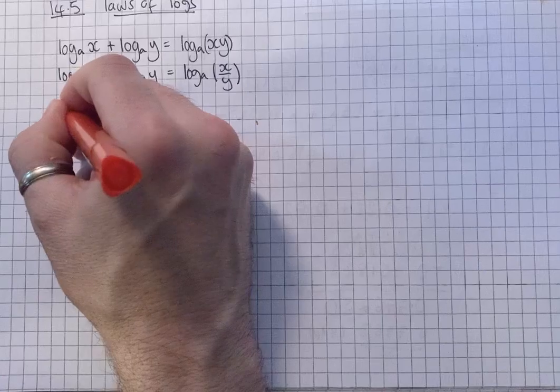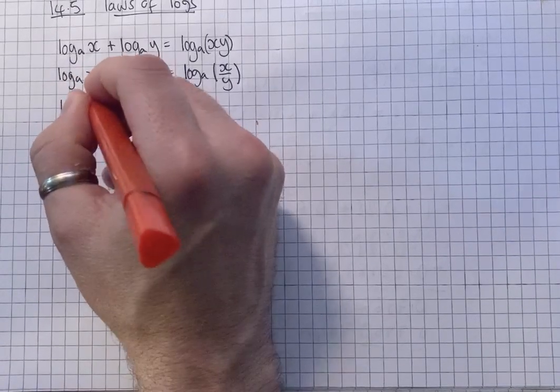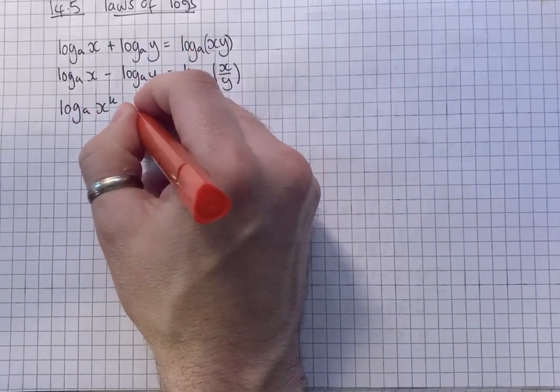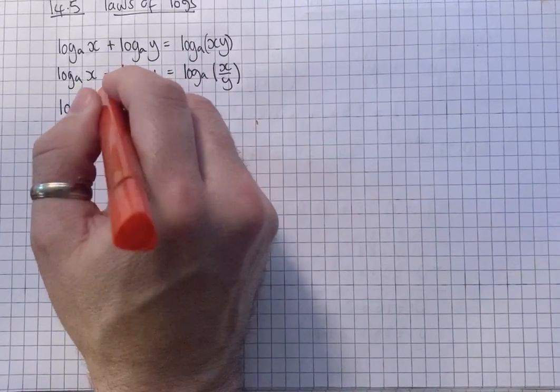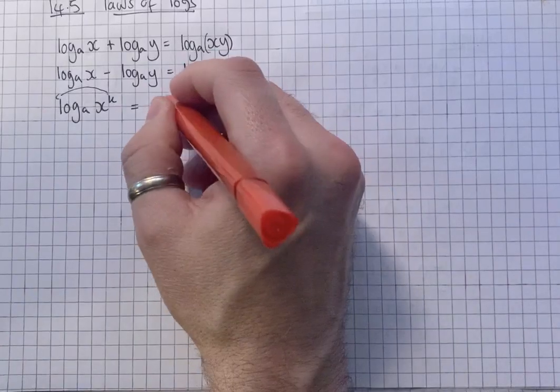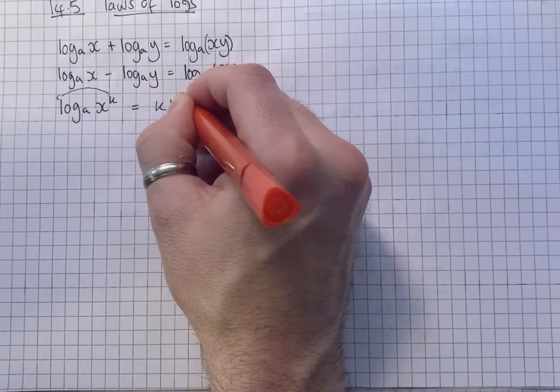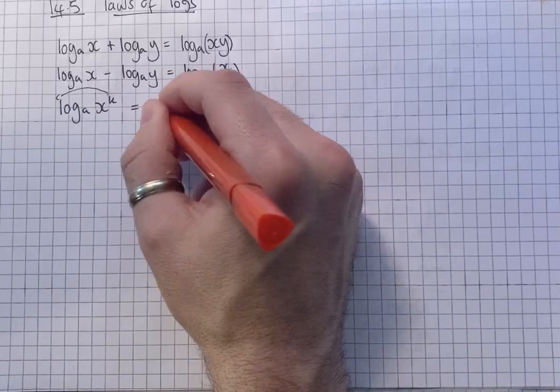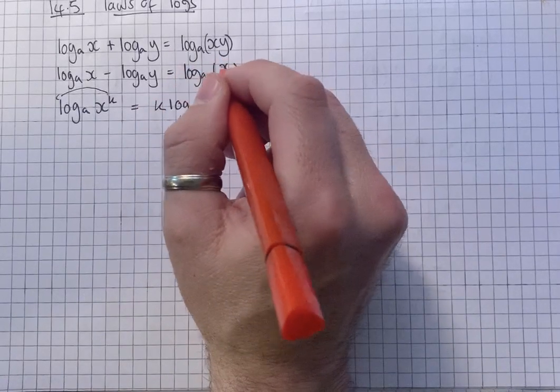The power law: if you've got log to the base a of x to the power of k, then what we can do, and this is a really useful law, we can just drop that power in front to make it k log to the base a of x. That's how you get rid of the power. You just bring it to the front of the logarithm.